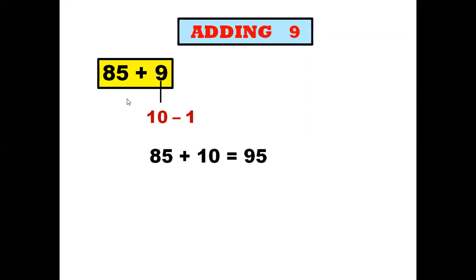So 94 is the answer. Let us take another example: 148 plus 9. So 9 can be written as 10 minus 1. We add 148 plus 10, which gives us 158. 158 minus 1 is 157, which is the answer.